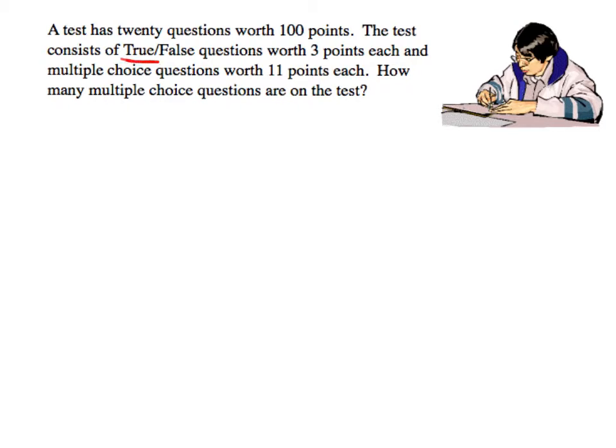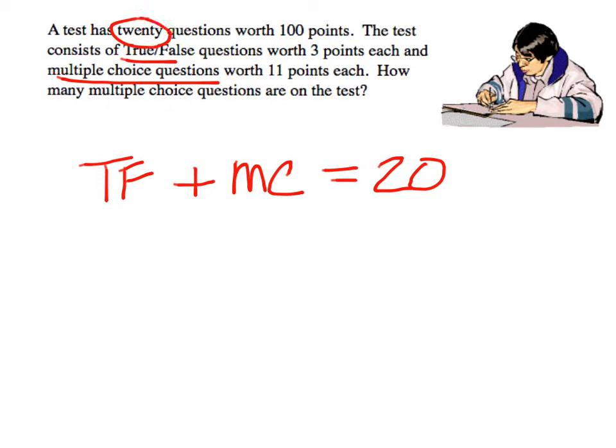You have two types of questions: true/false and multiple choice. So if you had true/false, which we'll just call TF, and you added that with multiple choice, that should equal 20. The number 20 is not written but it is spelled out there.